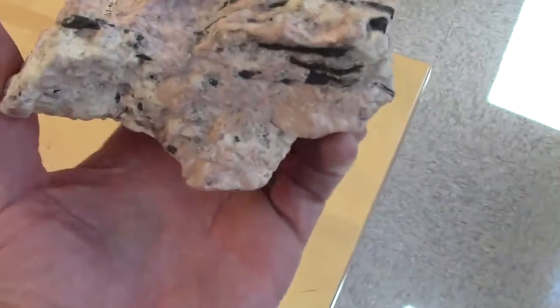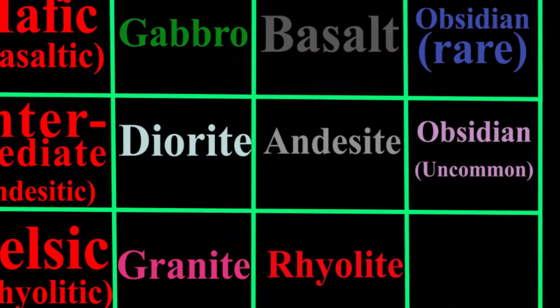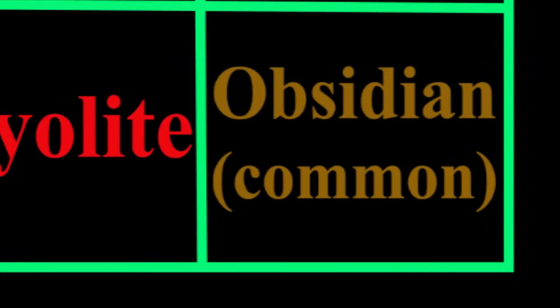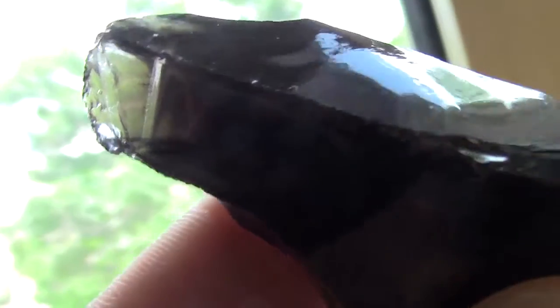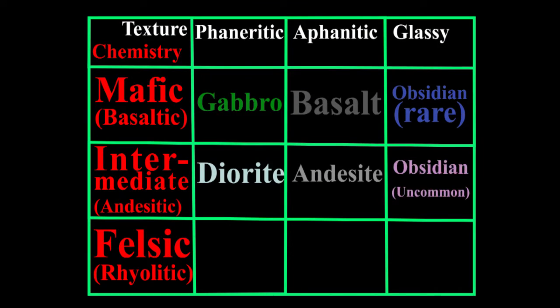As for the glassy textures, they really don't tend to form in the mafic and intermediate chemistries, because the viscosity there is low enough to allow atoms to migrate into crystal lattices rather easily. But as we get to the felsic, rhyolitic chemistry, the viscosity increases to a point that atoms get frozen where they are without migrating to crystal lattices, and thus glass forms.